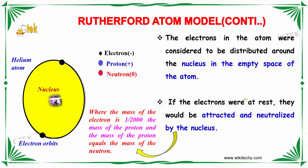The electrons in the atom were considered to be distributed around the nucleus in the empty space of the atom. The black color represents your electron, and you have your proton and your neutron. The mass of the electron is 1/2000 of the mass of the proton, and the mass of the proton is equal to the mass of the neutron.